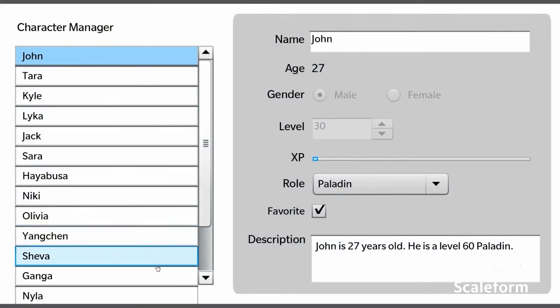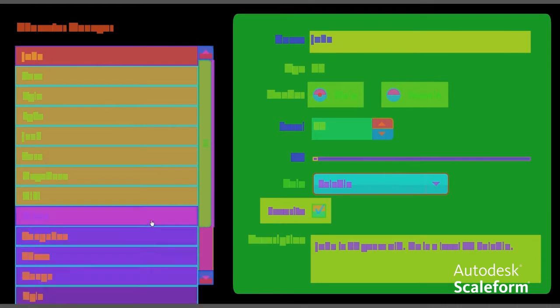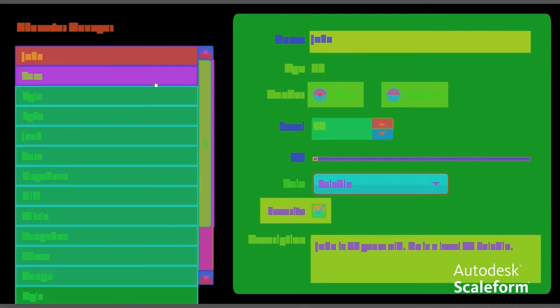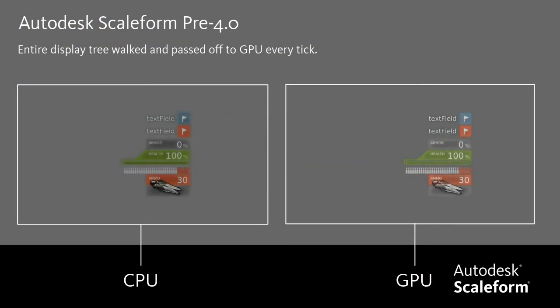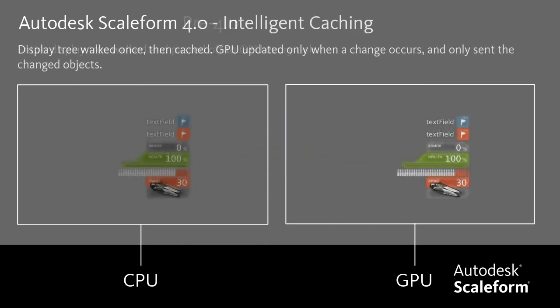4.0 also incorporates new intelligent batching of similar Flash objects, reducing draw calls significantly. In previous versions of Scaleform, we traversed the display tree of Flash objects every tick of your game, sending the entire frame to the GPU to be rendered. Our new intelligent caching system traverses the display tree once, then caches it, only traversing the tree again and updating the GPU when a change occurs, and only sending the parts that changed instead of the entire tree.